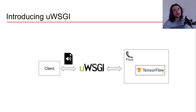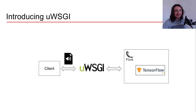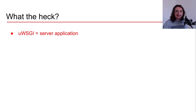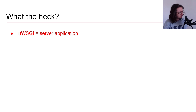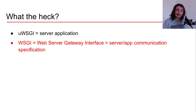So what is uWSGI? uWSGI is a server application, and we can use it for example as an HTTP server, although we usually want to use it as middleware — which is what we're going to do. In the next video we're going to put nginx in front of uWSGI, and that is the typical architecture you use for web applications with Python.